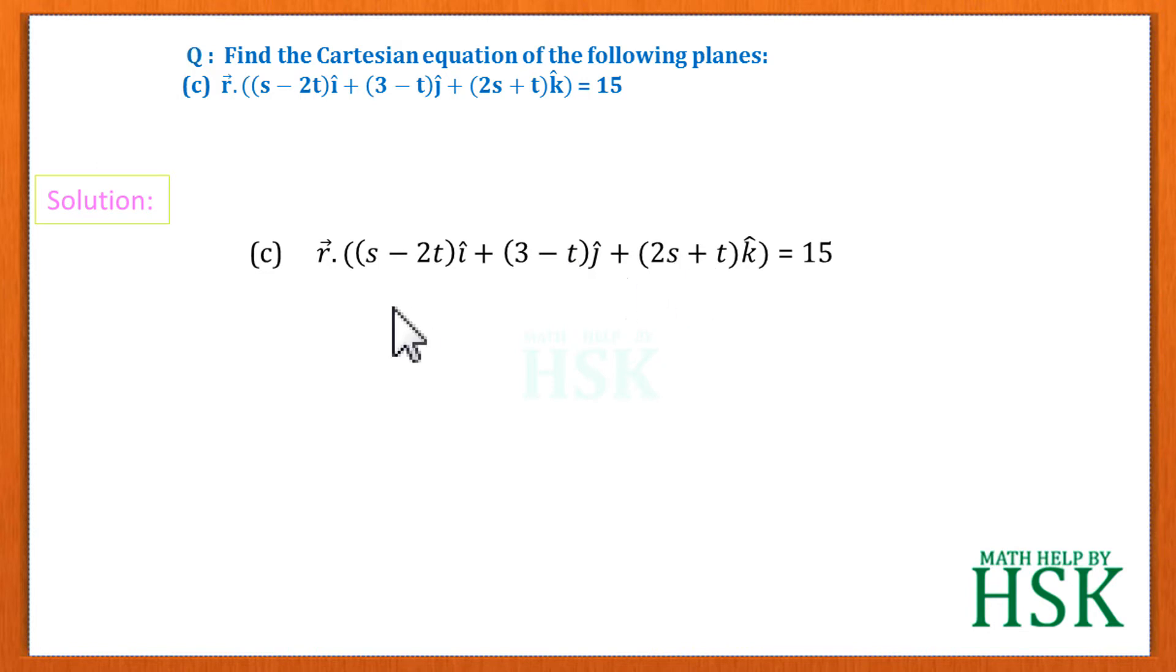So we need not have to worry about these terms. We are going to simply solve as we have solved part a and b. So taking r = xi + yj + zk, we can place the value of this vector r and we are going to get the expression like this.